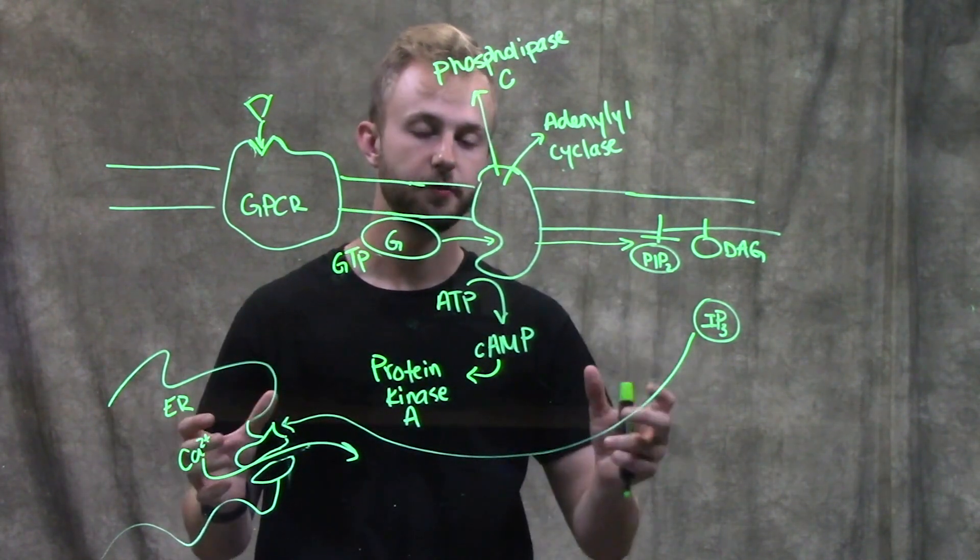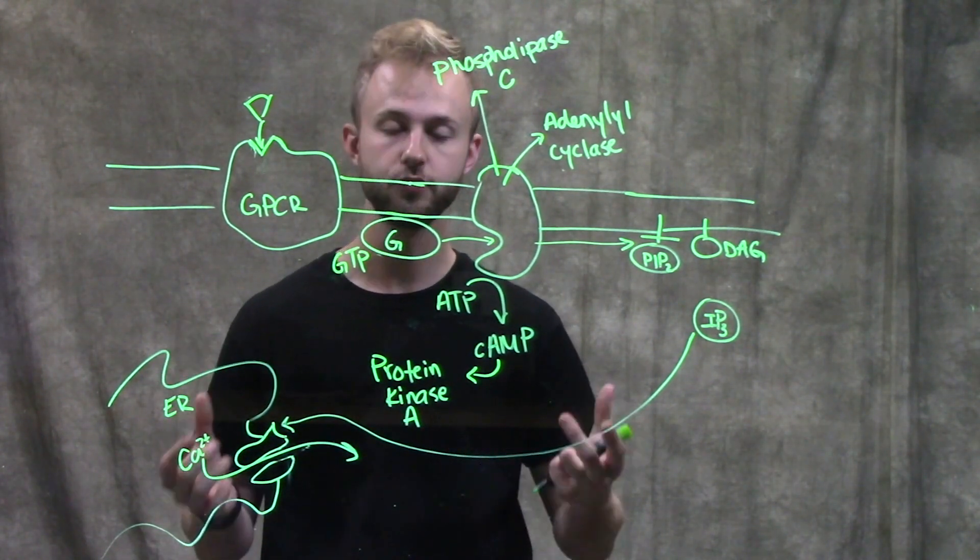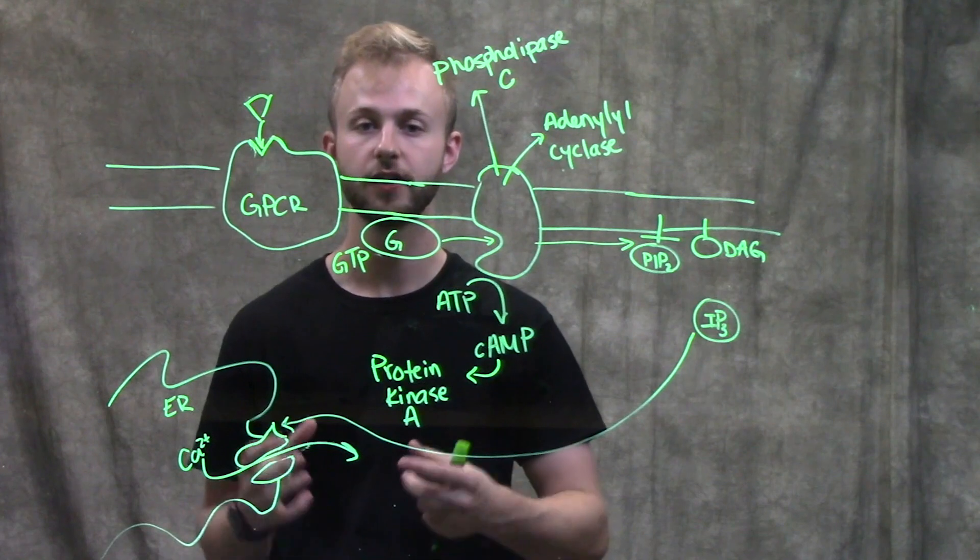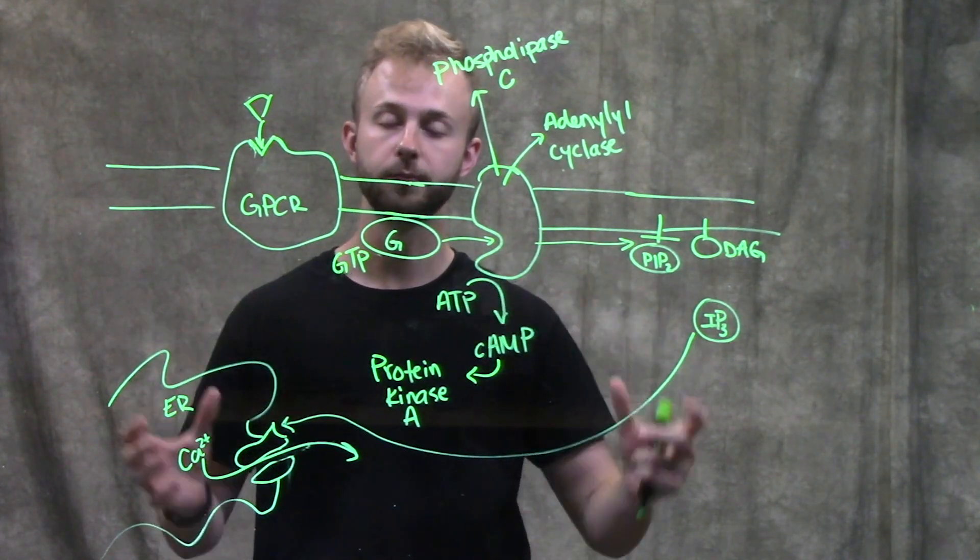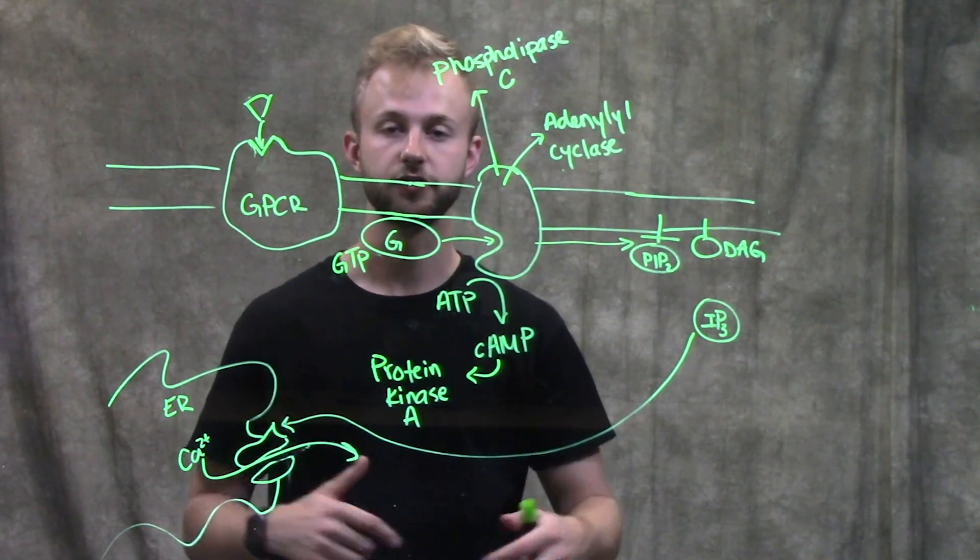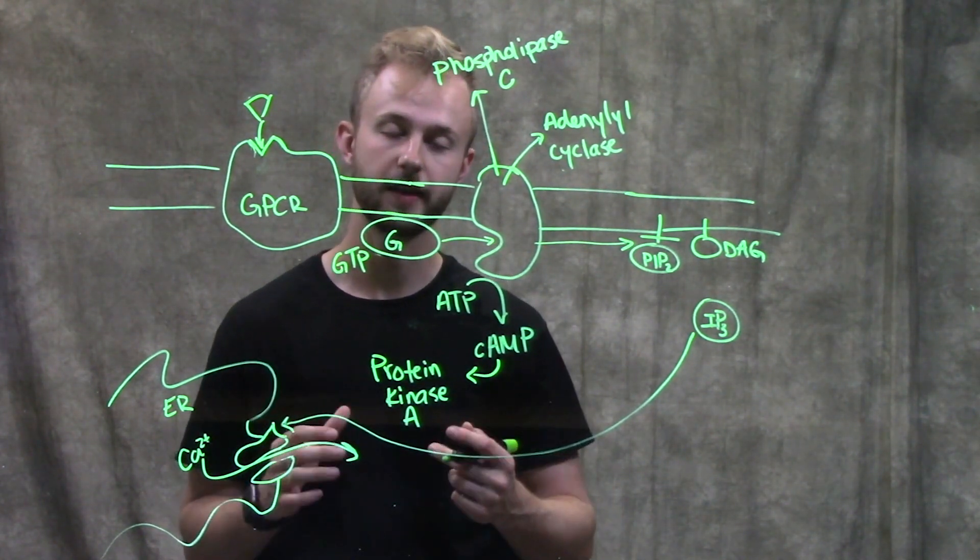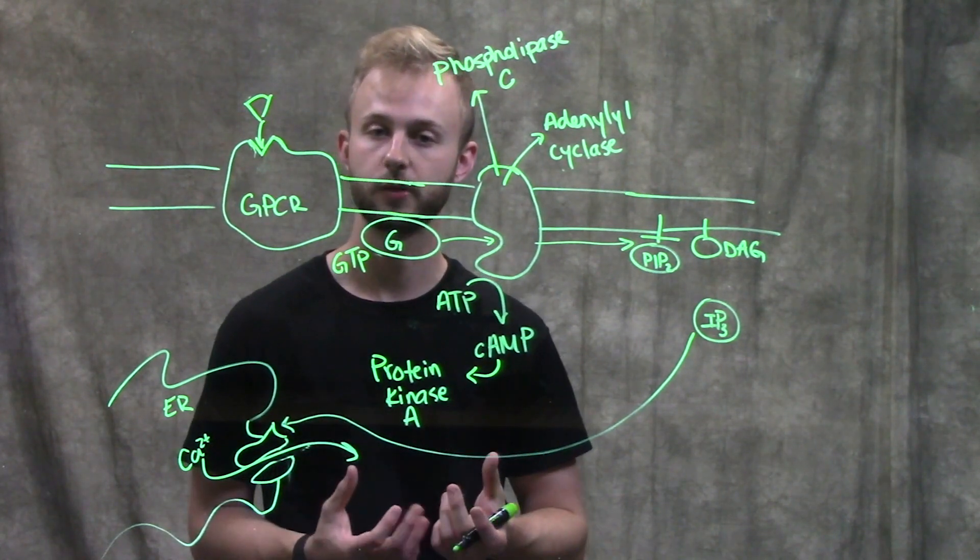Through both of these processes, we're going to get signal amplification because we're going to have a huge increase in the second messengers that can then activate multiple different things to bring that signal to the cell and actually cause a cellular response. And the last thing we're going to look at is something called a scaffolding protein.